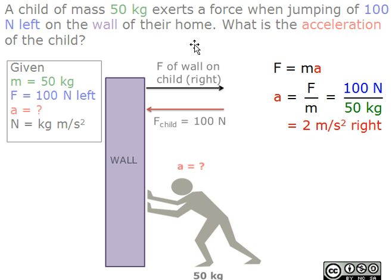We plug in the numbers in the given and we get 100 newtons over 50 kilograms. This equals 2 meters per second squared to the right.